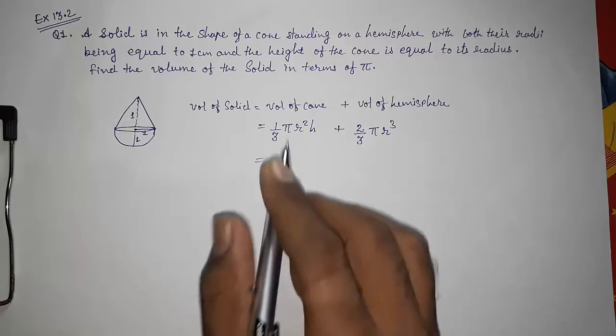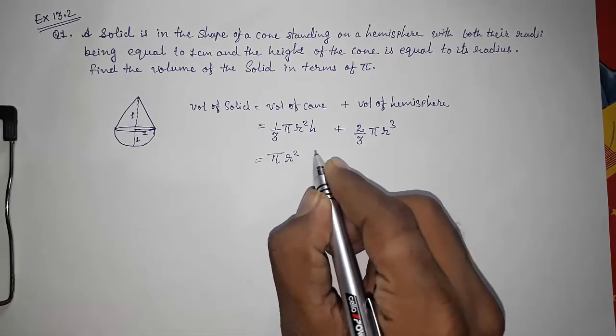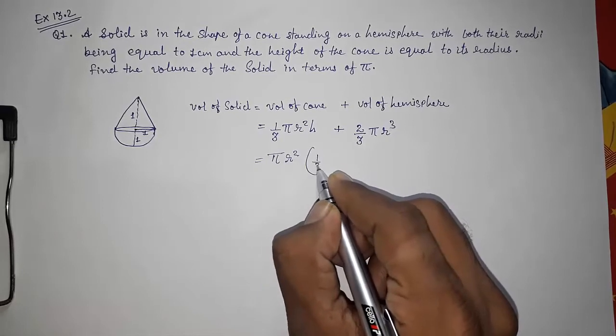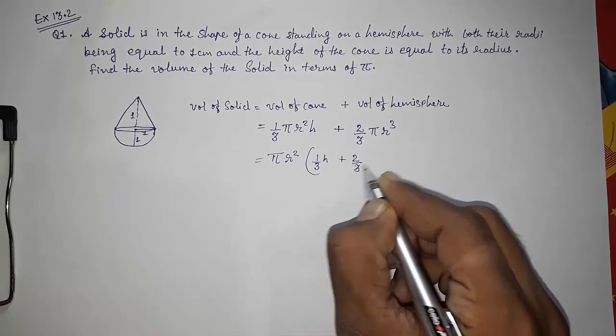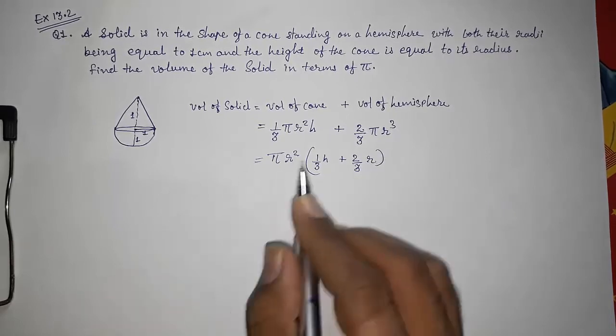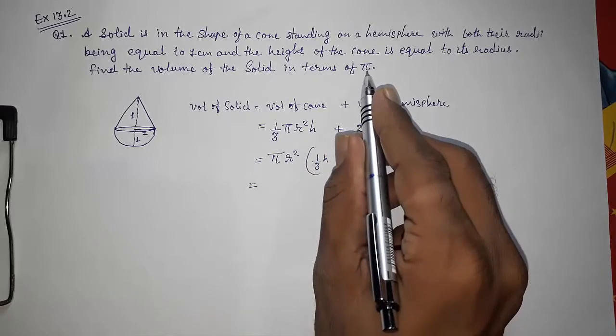We can take out 1/3 also common, but we are not going to do that. We are only going to take πr² common. So remaining will be 1/3 × h plus 2/3 × r. Now we are going to put the values, and we are not going to substitute the value of π as they told us to find the answer in terms of π.